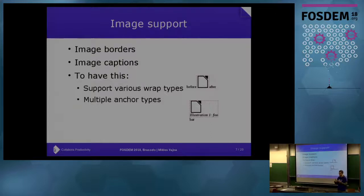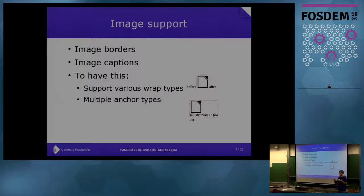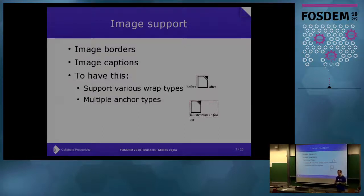From a user's point of view, a caption on an image is just one more property of the image, and this is something that e-books use a lot. Technically, that's a text frame containing an image with some additional text that contains text fields. So all of these building blocks are implemented too, and you will see working caption support for images.